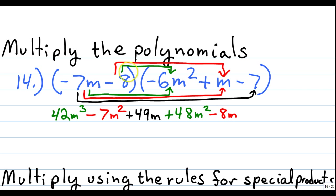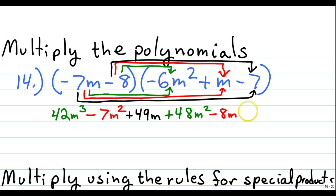Lastly, we're going to distribute this negative 8 to negative 7. Negative 8 times negative 7 makes positive 56. Now we need to go back and see if there are any like terms that we can combine.